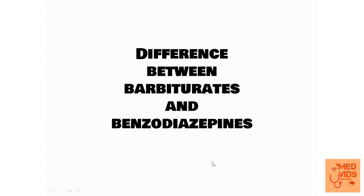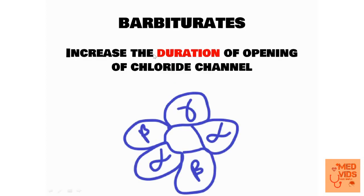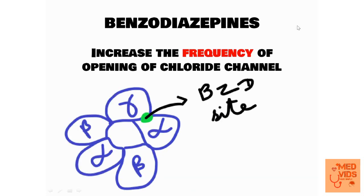When barbiturates bind to either the alpha or beta subunit of the GABA receptor, they cause opening of the chloride ion channel, and this opening is sustained for a long duration. Throughout that duration, there will be influx of chloride ions, causing prolonged hyperpolarization — and that's how barbiturates carry out sedation or hypnosis. The key point: barbiturates increase the DURATION of opening of the chloride channel.